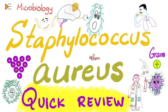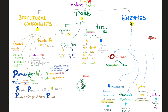Let's talk more about Staph aureus. Here are the virulence factors. We have structural components, toxins, and enzymes — specifically five structural components, four toxins, and five enzymes. The most important structural components are the capsule, the slime layer, peptidoglycan, teichoic acid, and protein A — also known as staphylococcal protein A.